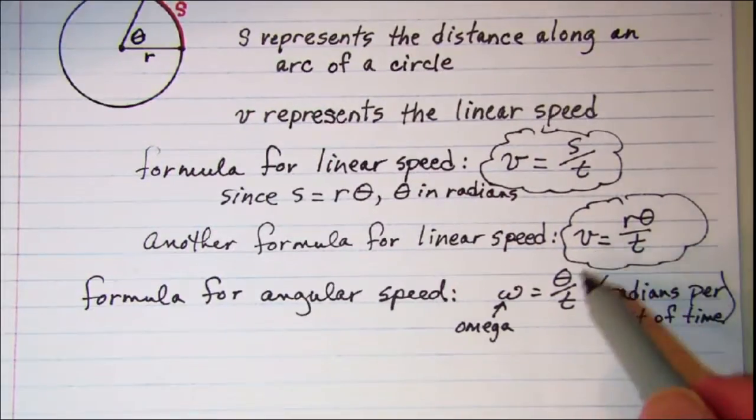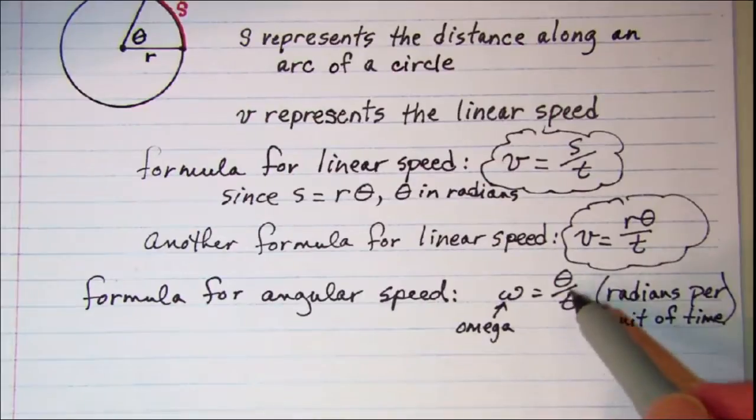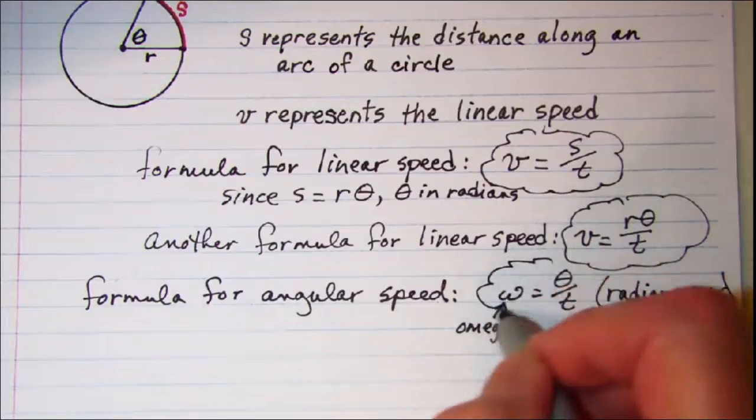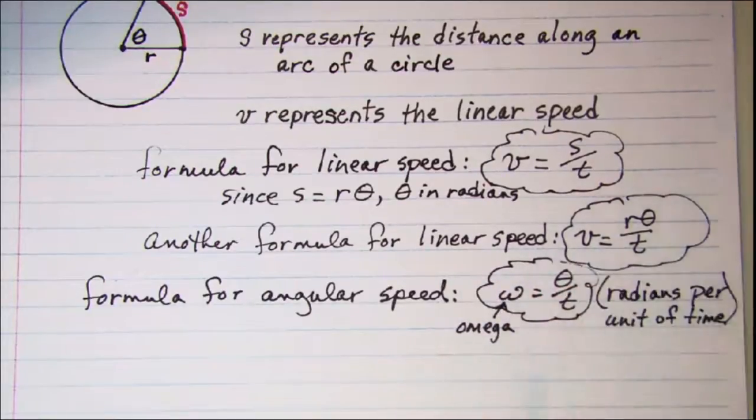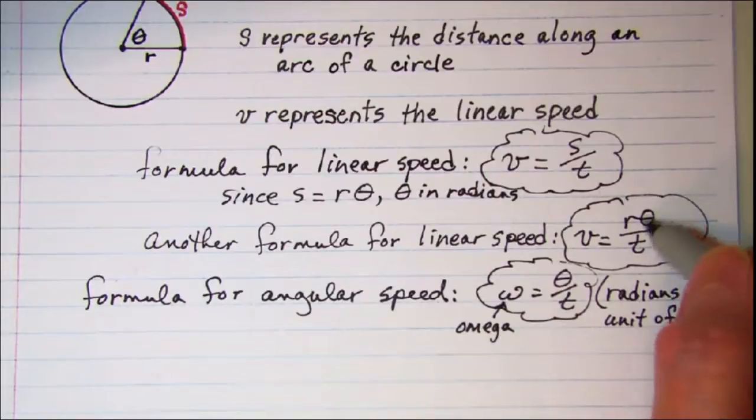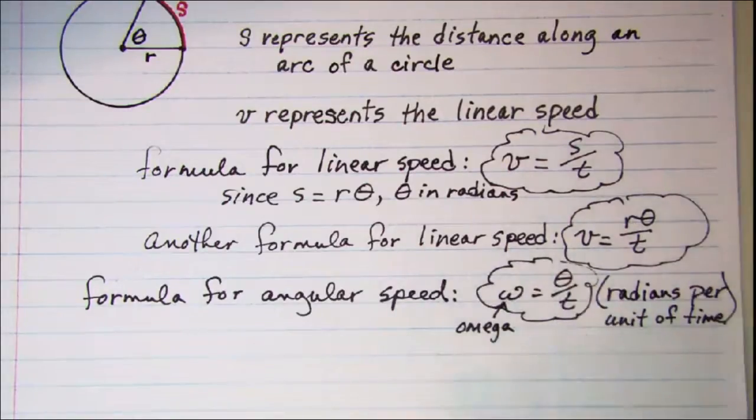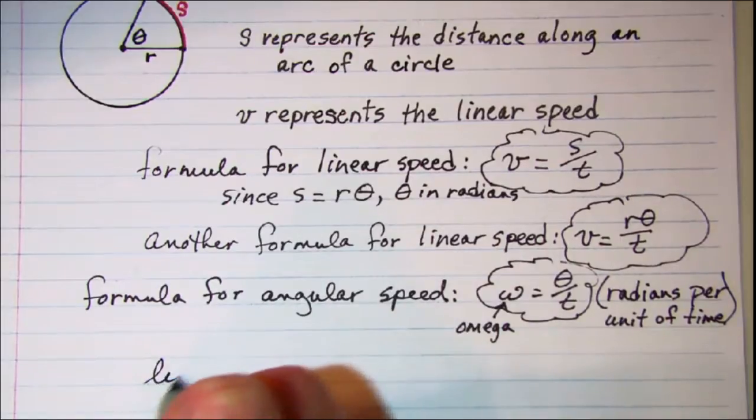And that's just radians per second, or radians per minute, or something like that. So this is a formula for angular speed. And then notice that in this formula we have theta over t as one factor multiplied by r, so that gives me yet another formula for linear speed.